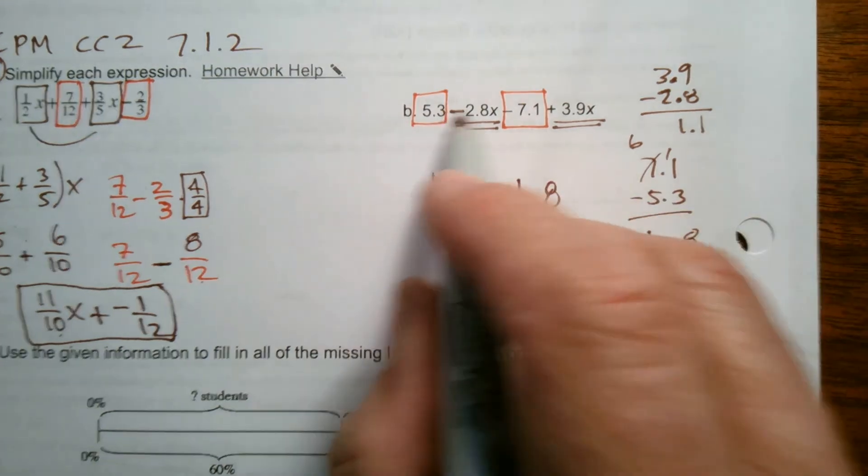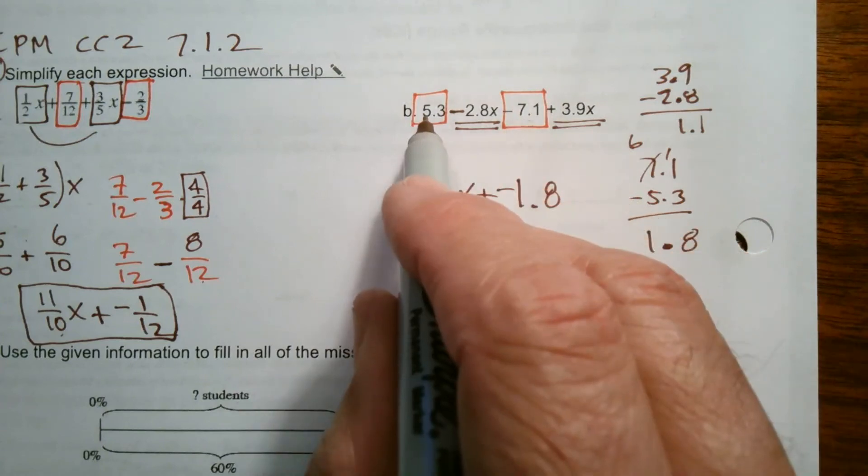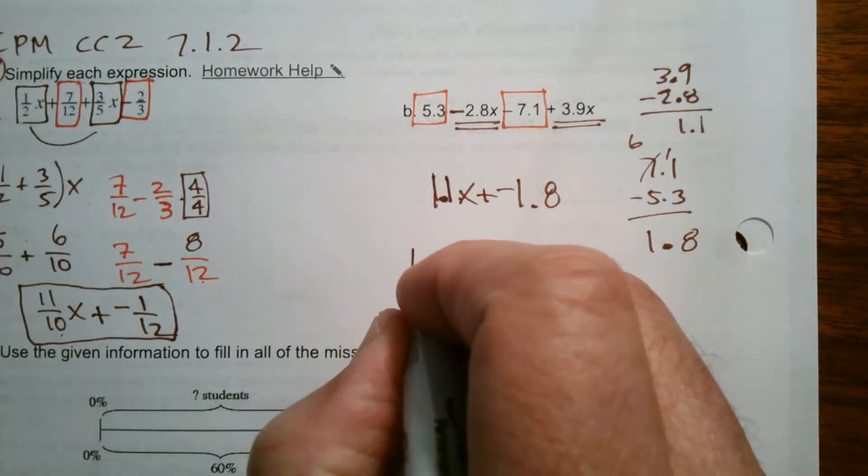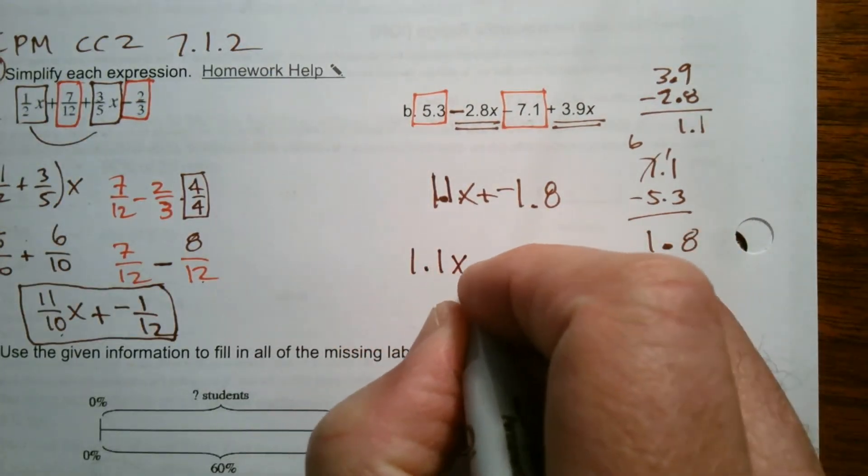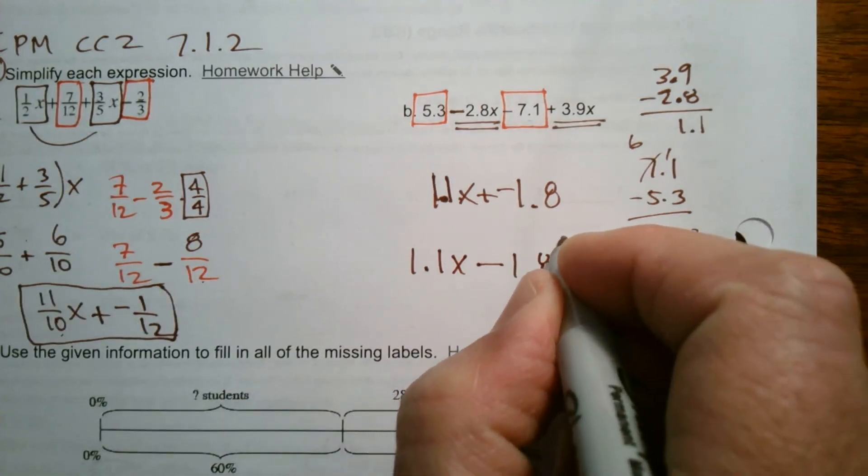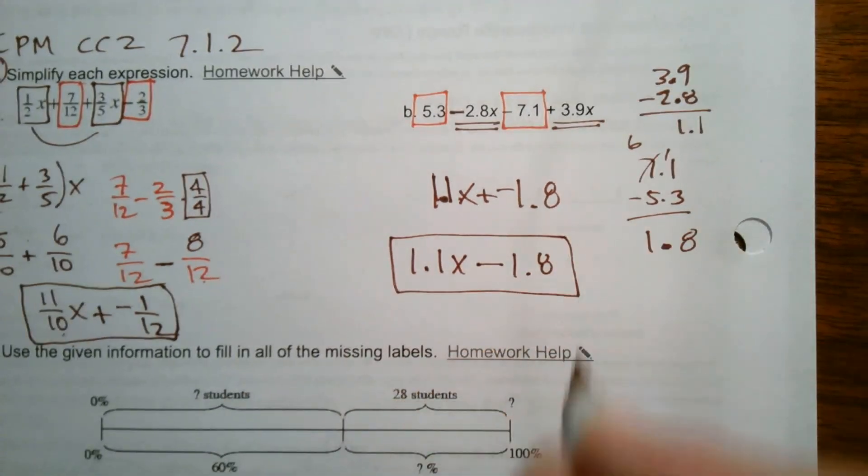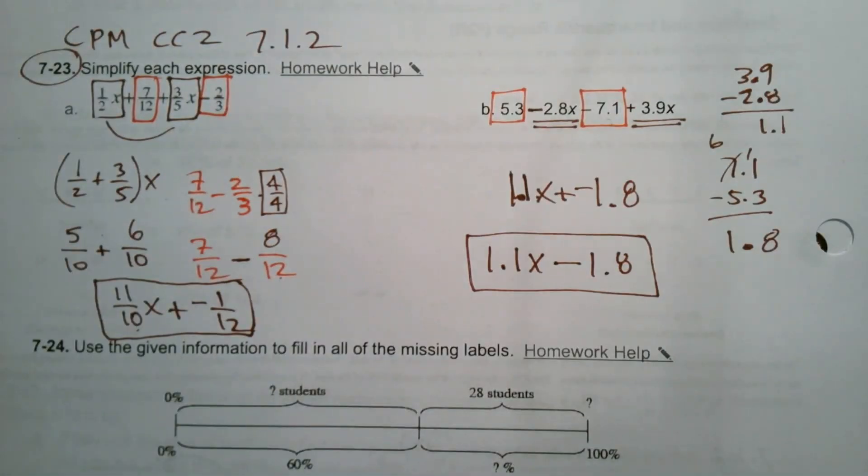So I have plus negative 1.8 because there's more negatives than there are positives. So I can rewrite this 1.1x minus 1.8. And there's that simplified expression. All right, there we go.